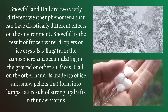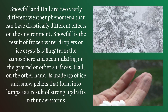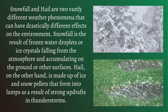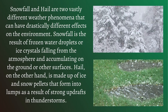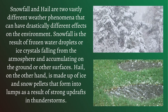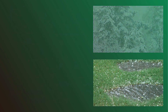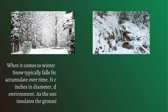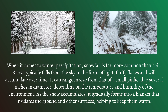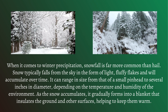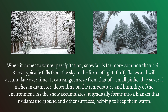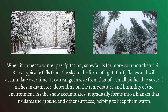Hail, on the other hand, is made up of ice and snow pellets that form into lumps as a result of strong updrafts in thunderstorms. When it comes to winter precipitation, snowfall is far more common than hail.